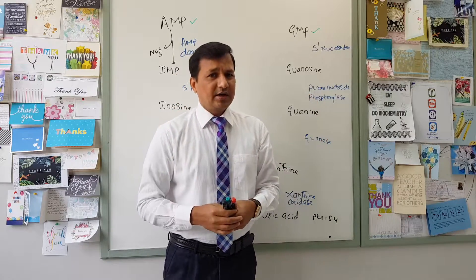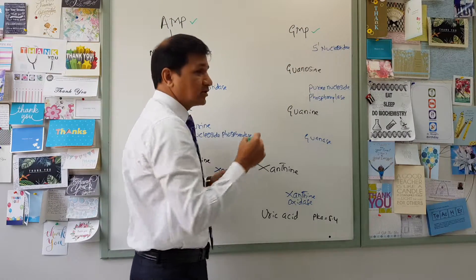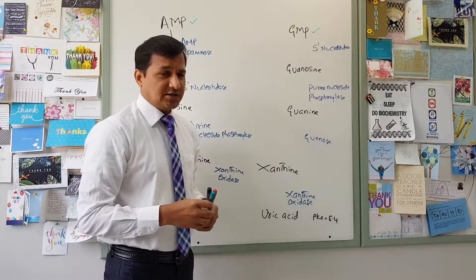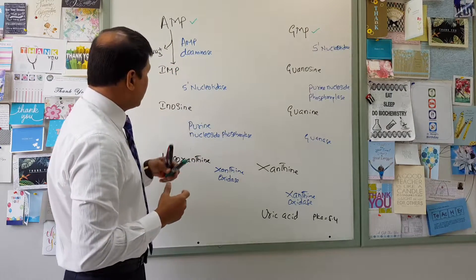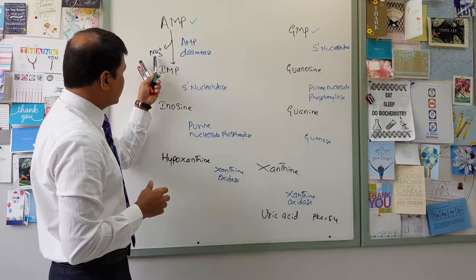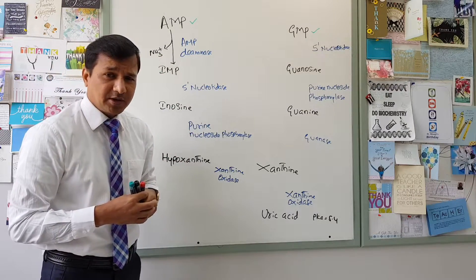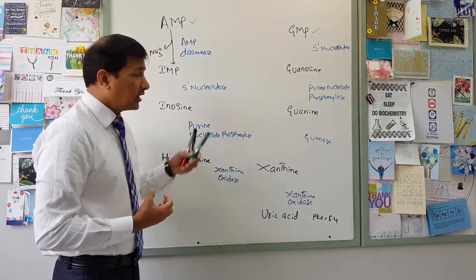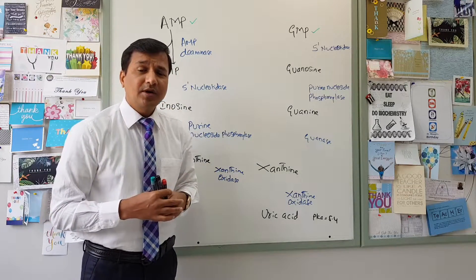We have two purine nucleotides: AMP (adenosine monophosphate) and GMP (guanosine monophosphate). AMP undergoes a deamination process to form IMP, and the job is done by AMP deaminase. There is a release of ammonium ion, which is one of the sources of ammonium ion in our body. That ammonium ion must be handled properly, otherwise it can lead to hyperammonemia.